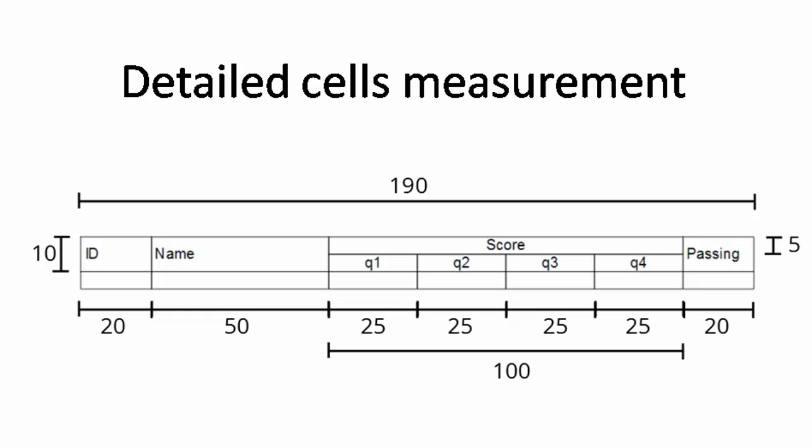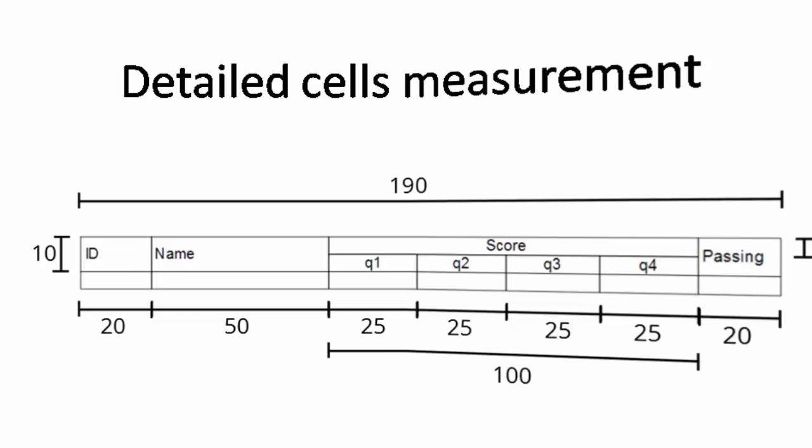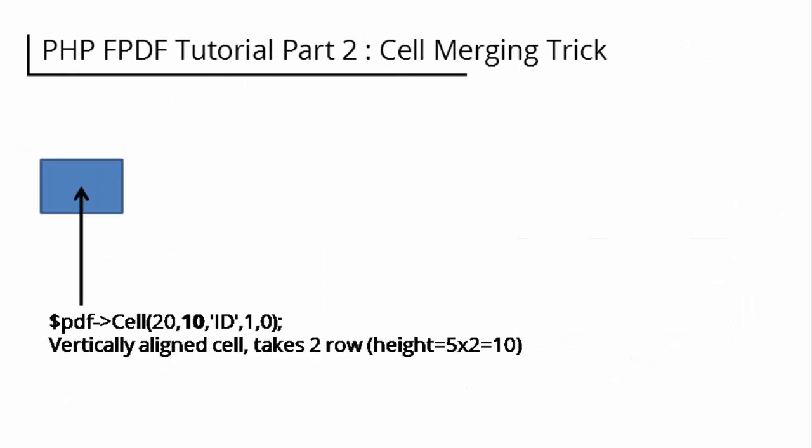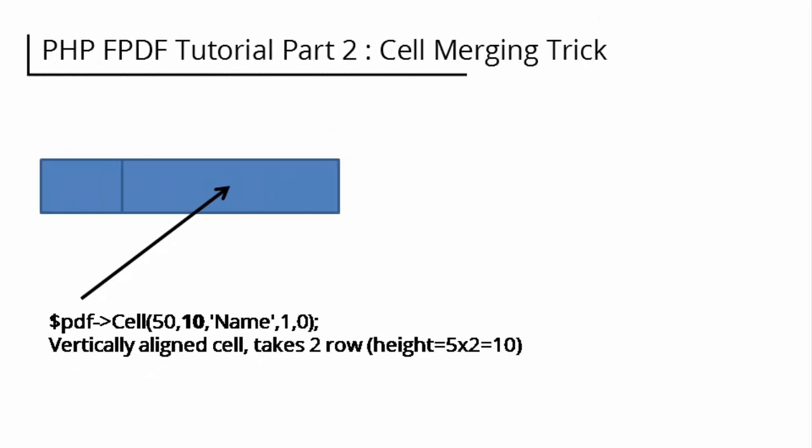The default row height is set to 5, so two vertically merged cells should be 10 in height, and so on. In FPDF there are no cell merging options, so we have to do it ourselves. The first cell is a two-row, one-column merged cell, so we set the height to 10.